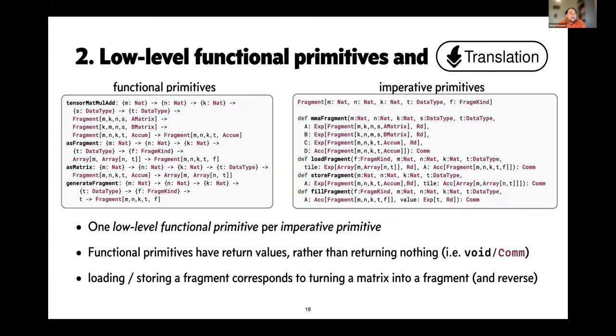As the next step, once we have these imperative APIs, these imperative primitives now just shown again on the right-hand side, we want to design functional primitives, which are shown on the left-hand side, that we can rewrite our computations into. That means we have here a one-to-one mapping again where one low-level functional primitive such as a tensor MatMult add or an S fragment S matrix correspond directly to the computation or to the effect being performed on the right-hand side.